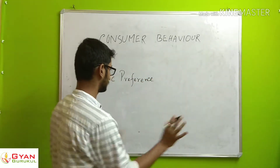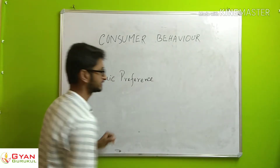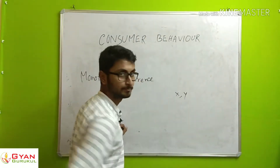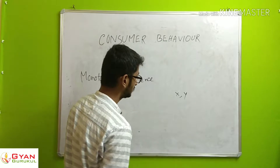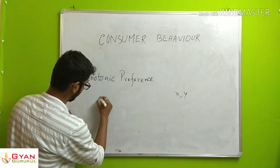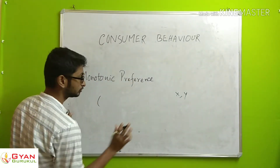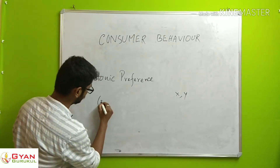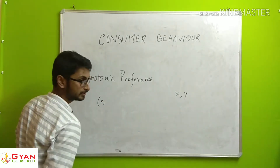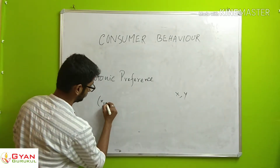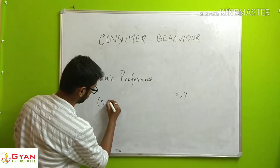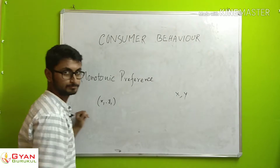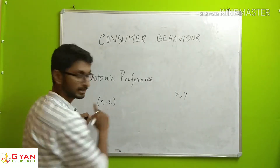Suppose I am going to show the indifference curve using Commodity X and Commodity Y. We have an amount of Commodity X, which is X1 — this is the first bundle. And Commodity Y is Y1 — this is the second component.